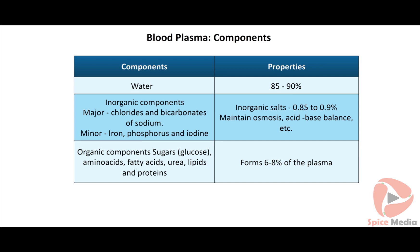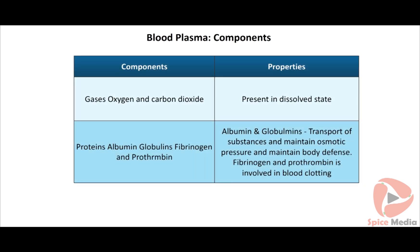About 6–8% of plasma is represented by organic components. The major organic components are sugars (especially glucose), amino acids, fatty acids, urea, lipids and proteins. Blood contains heparin, which helps in the clotting of blood. Plasma contains small amounts of gases such as oxygen and carbon dioxide in a dissolved state. Albumin is the major protein and helps in the transport of some substances and maintenance of osmotic pressure. Globulins participate in the transport of substances, defense reactions of the body, and maintenance of osmotic pressure.